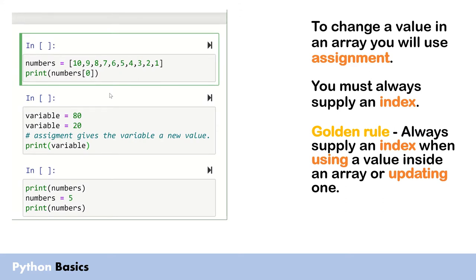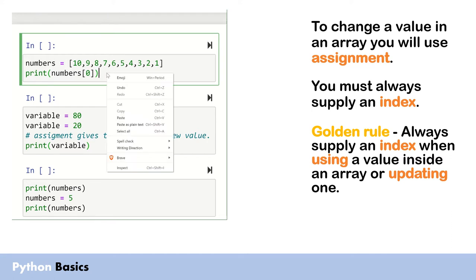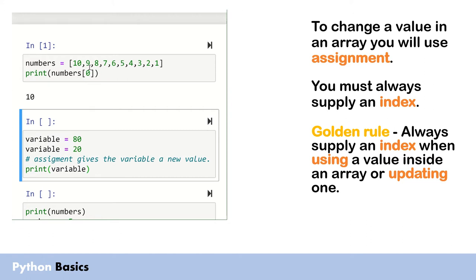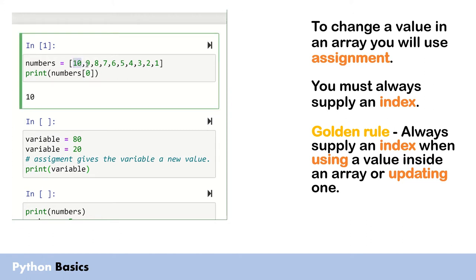We've already seen how to access values in arrays. Here I've got an array called numbers and the line says print numbers zero, which is going to print out just a single value. When we have an array it is made up of multiple values and whenever we want to use it we need to specify a single position known as an index. If I run this code it should print out 10 - and there we go. The reason is because it's zero-indexed, so position zero has the value of 10.